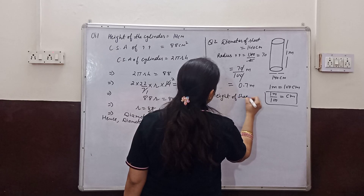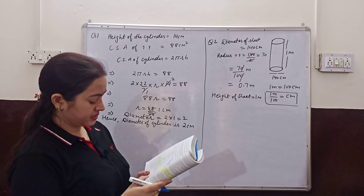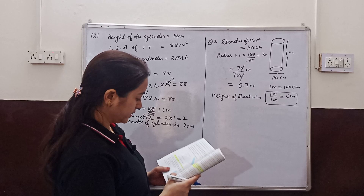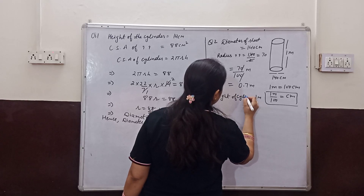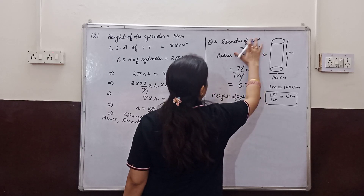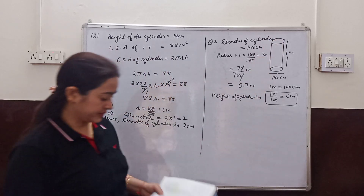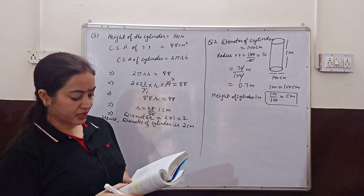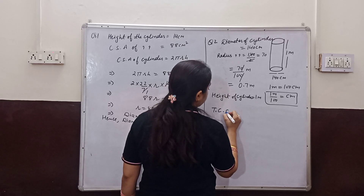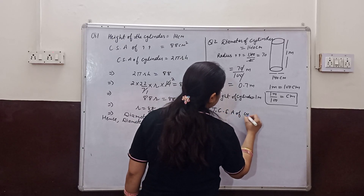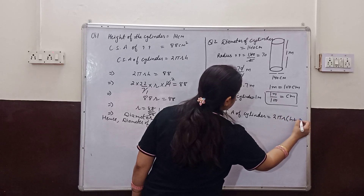The total surface area of a closed cylinder includes the curved surface area plus two circular bases. So the formula is total surface area equals 2πr(h + r). We can see the cylinder has a curved surface and two circular ends. The formula gives 2πrh plus 2πr².